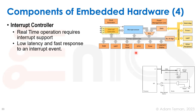An interrupt controller is a very important piece of hardware that enables external peripherals to stop the microprocessor's operation and tell it there's something to do. For example, when you move your mouse, it signals the microprocessor saying it wants to move. The interrupt controller finds that out, tells the microprocessor to stop its current calculation, and go update the mouse position. So an interrupt controller is a really important part of an embedded system.